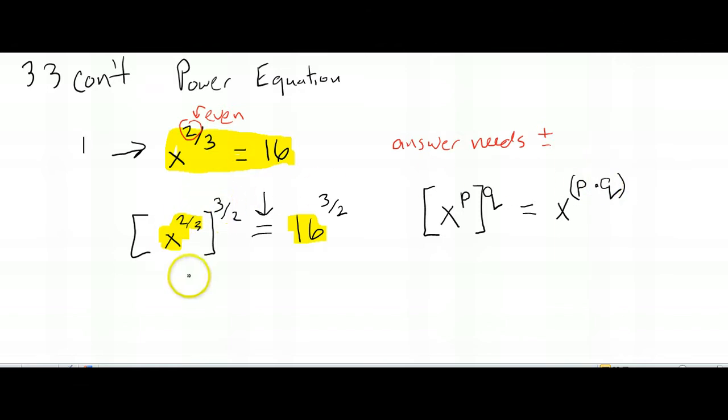So what's going to happen here, we get x to the 2/3 times 3/2 equals 16 to the 3/2. Now, what happens when you multiply reciprocals? The 3 cancels with the 3, the 2 cancels with the 2, and we're left with just, this all multiplies to 1, we're left with just x to the first power. And that's why we use this tool to solve these power equations.